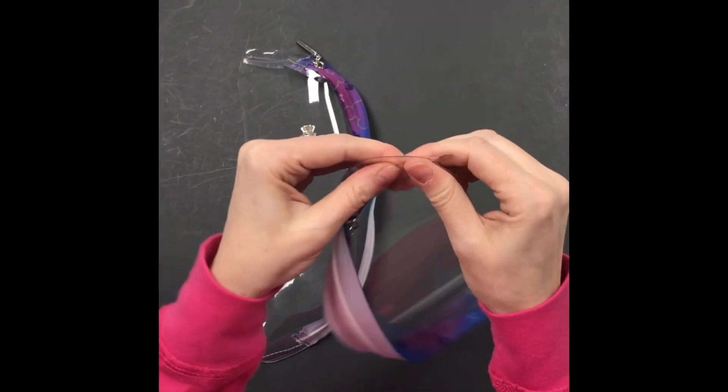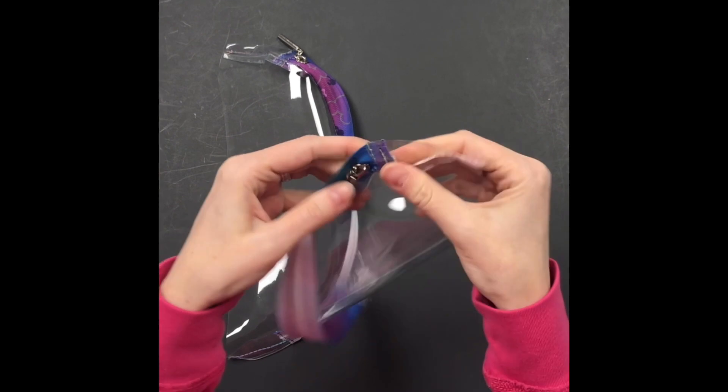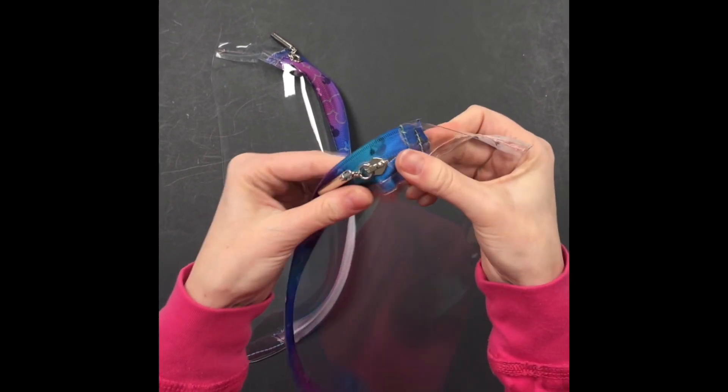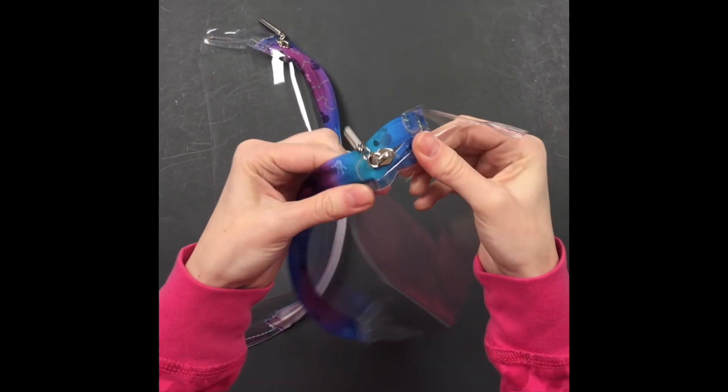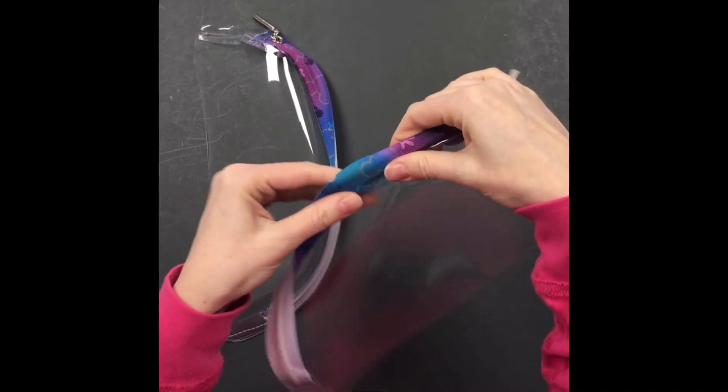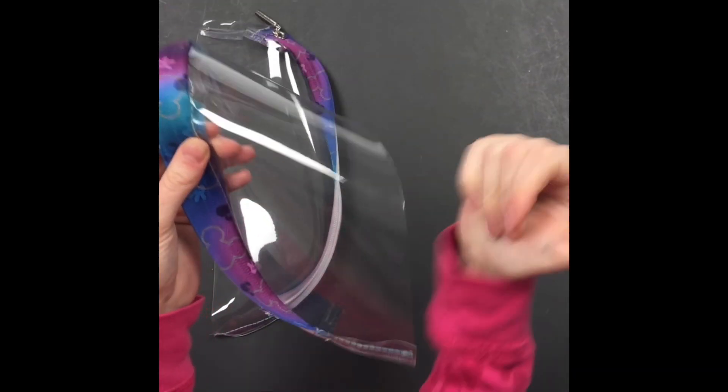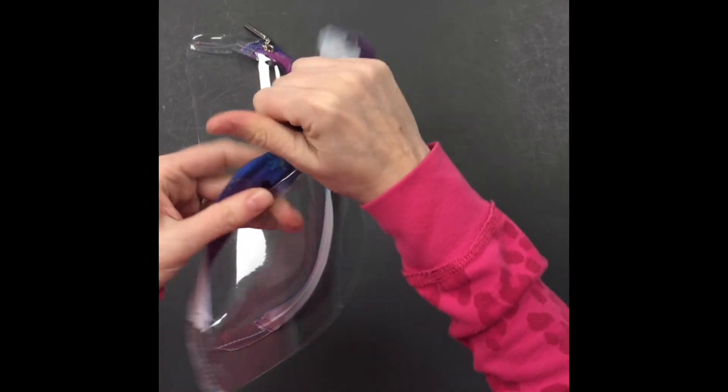Just sewn them in place, now we're just gonna finger press this to the right side. Now the very first one I made I did go ahead and top stitch the zipper that way, but I found that I was really fighting with the hard plastic to lay smooth.